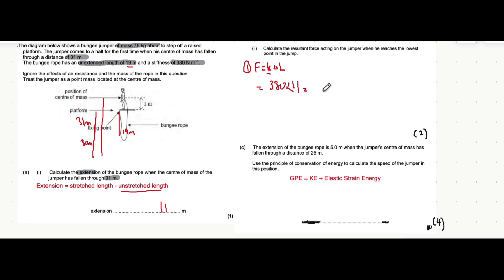Great, now let's move to part C. So it says the extension of the bungee rope is 5 meters when the jumper's center of mass has fallen through a distance of 25 meters. Use the principle of conservation of energy to calculate the speed of the jumper in this position.